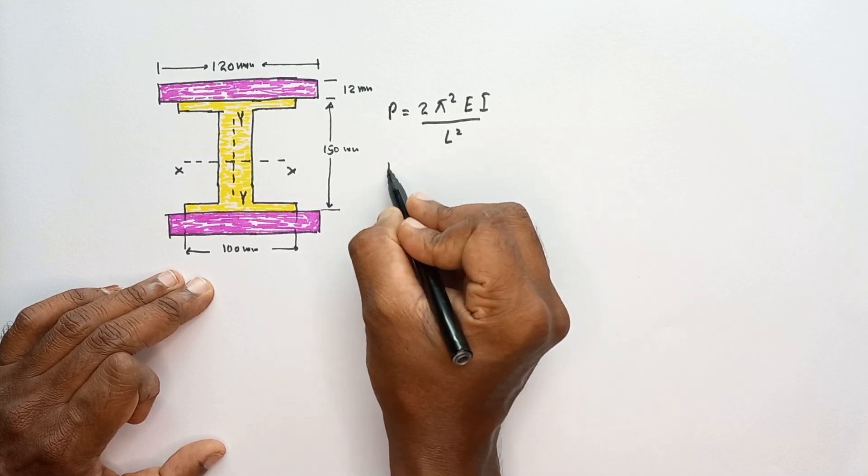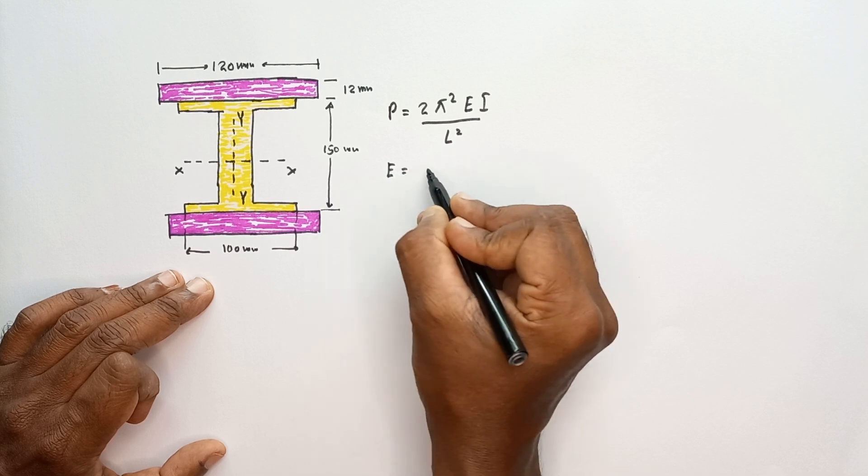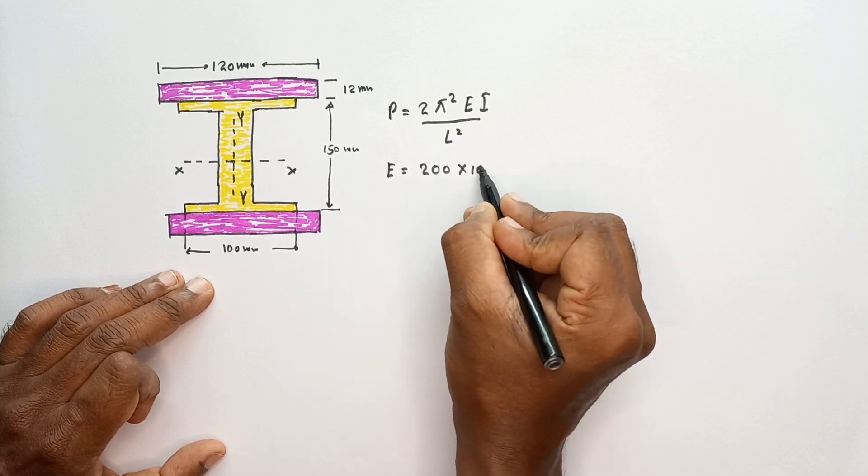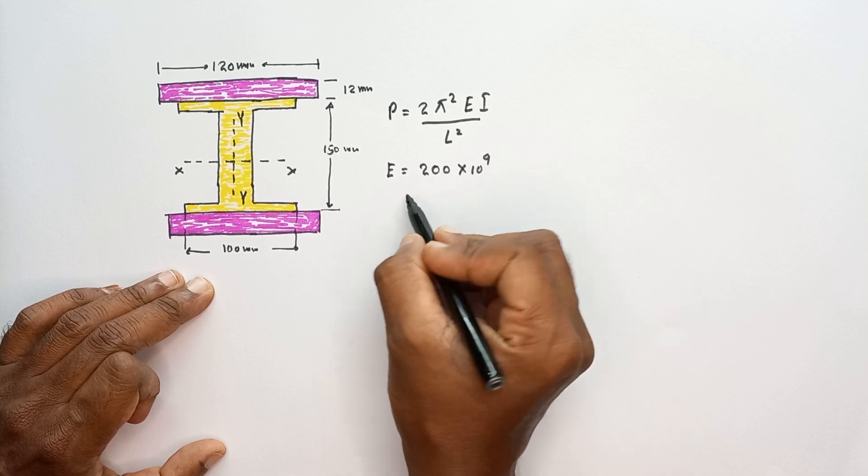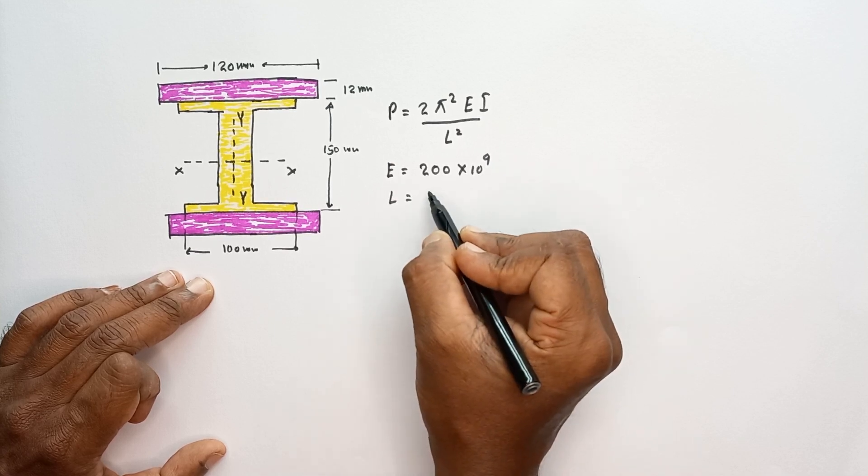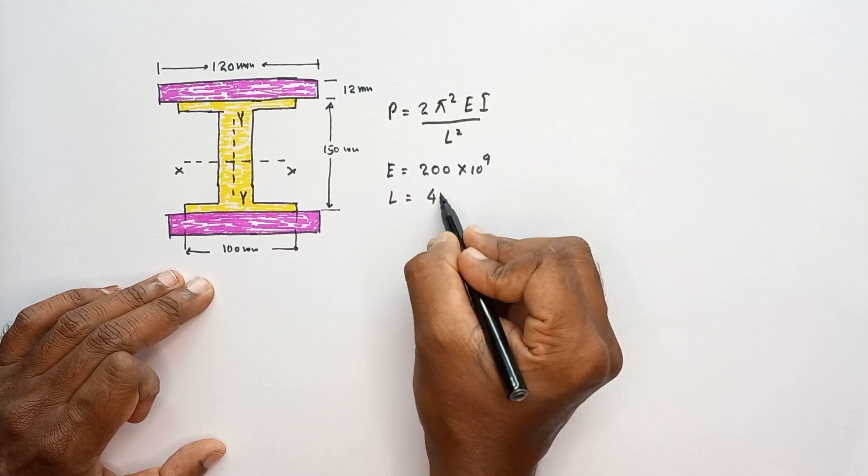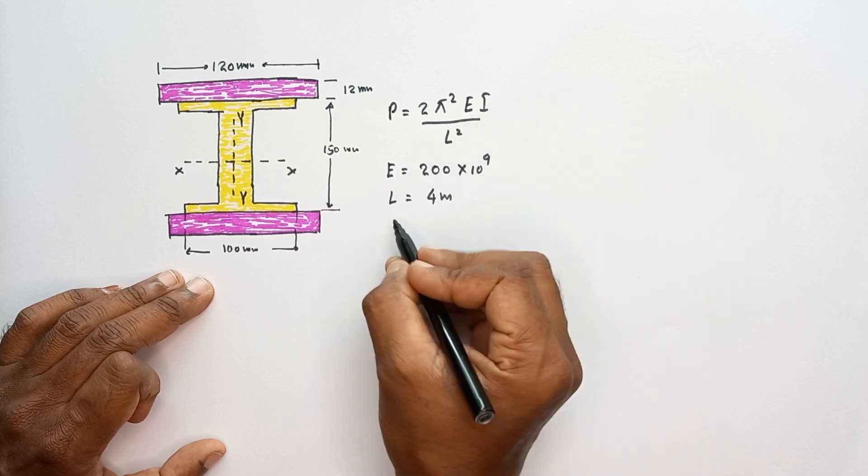In this equation, E is known, 200 gigapascals, then L also given, four meters. Here we have to find the I value.